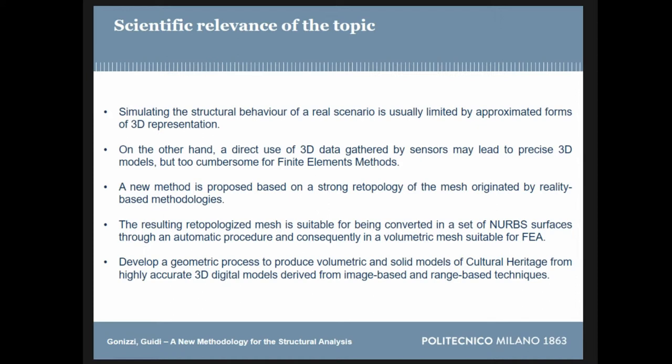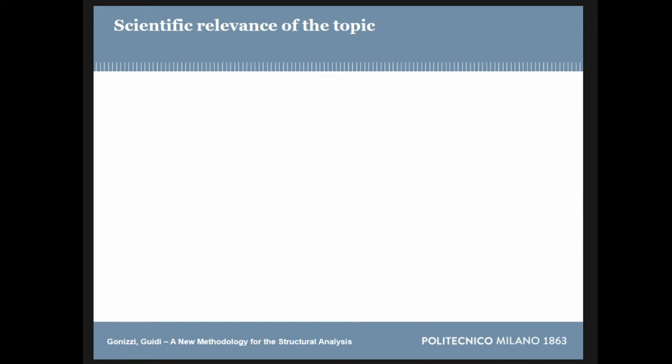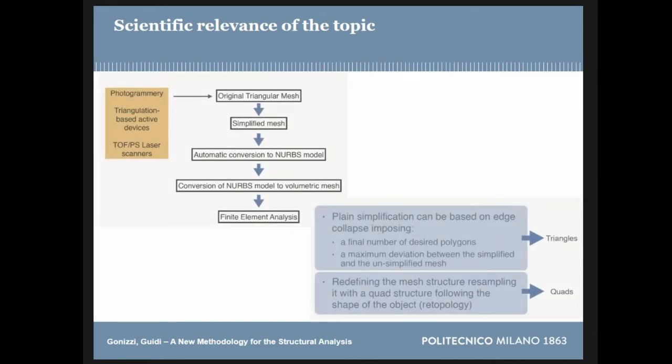We started using retopology, which allows a strong simplification of the models while maintaining high accuracy. These retopologized meshes were then suitable to be converted into NURBS models. This is more or less the pipeline of the methodology: acquisition of the models through photogrammetry or laser scanning, simplification of the mesh, conversion to NURBS with an automatic tool, creation of the volumetric mesh, and then the analysis.